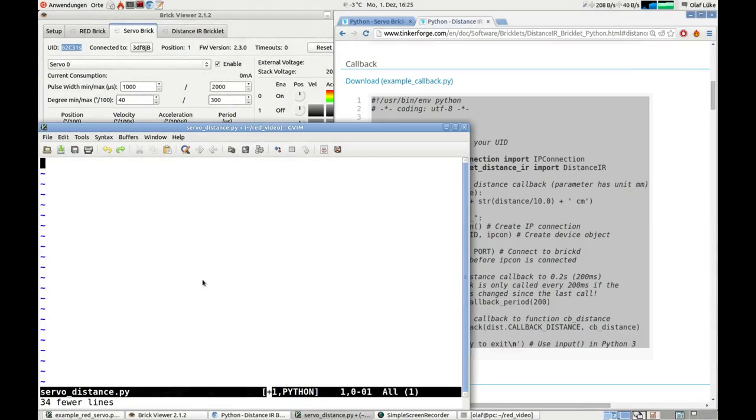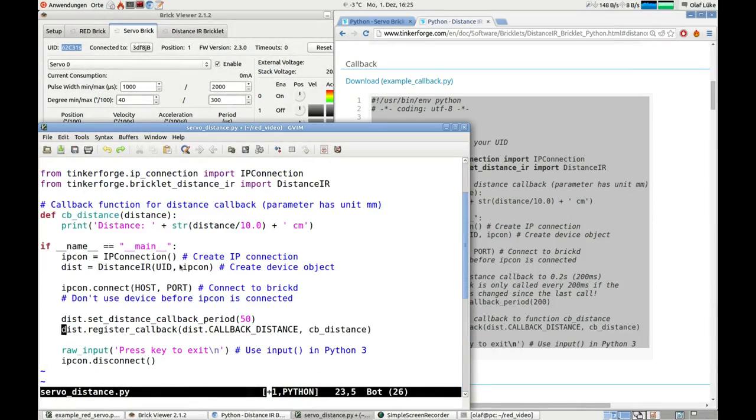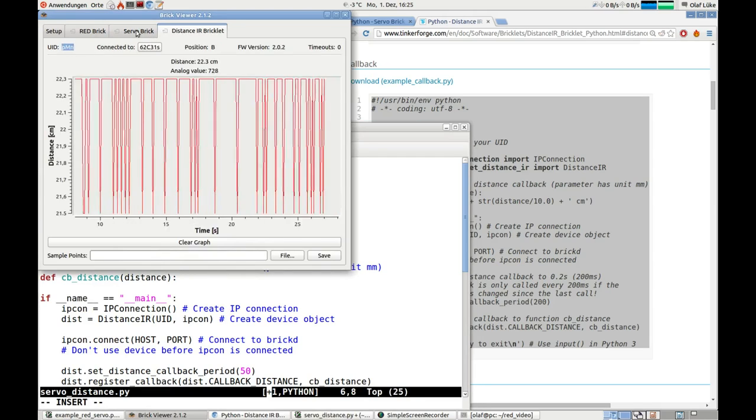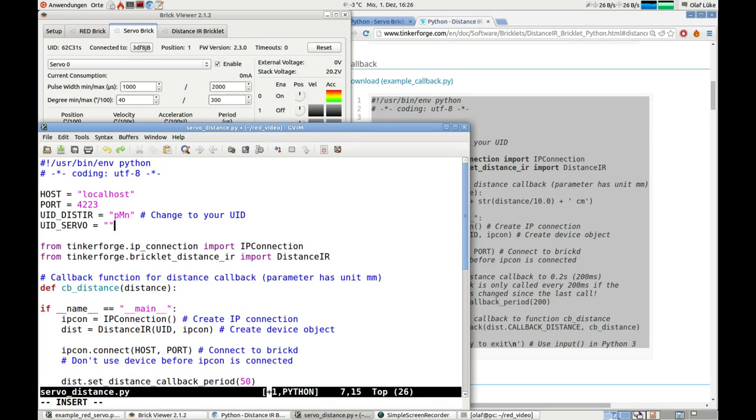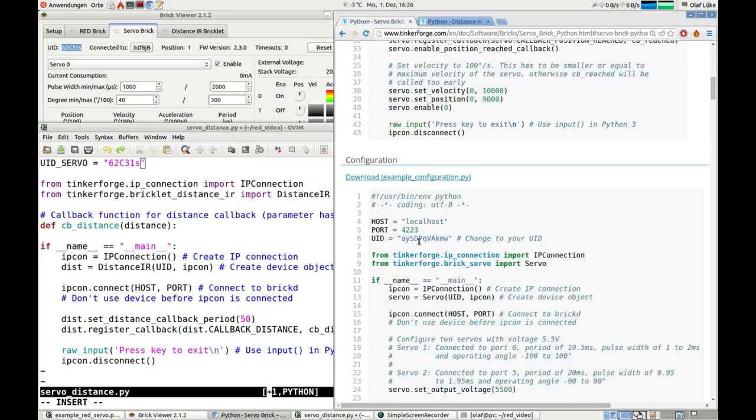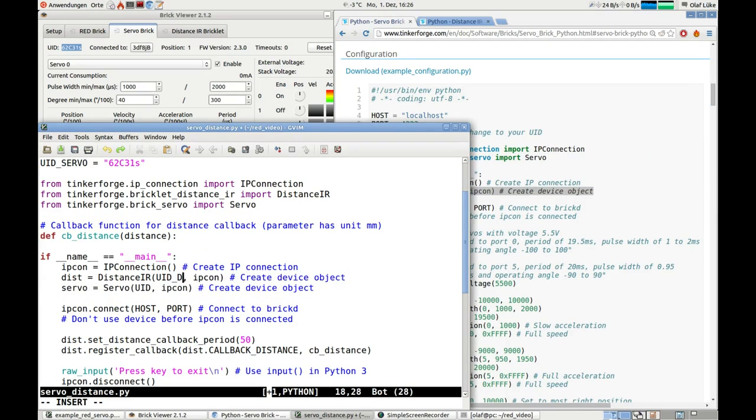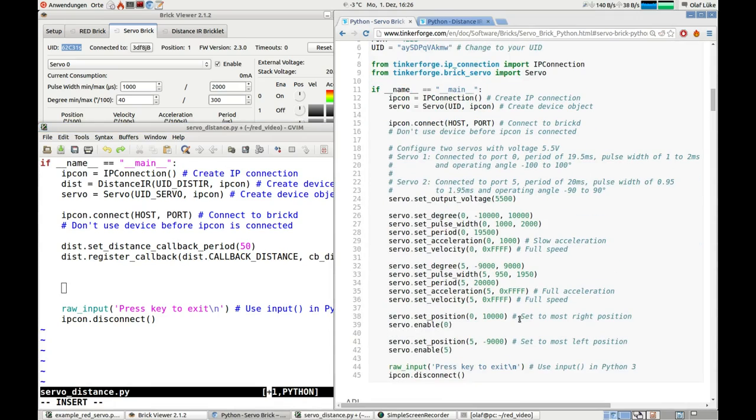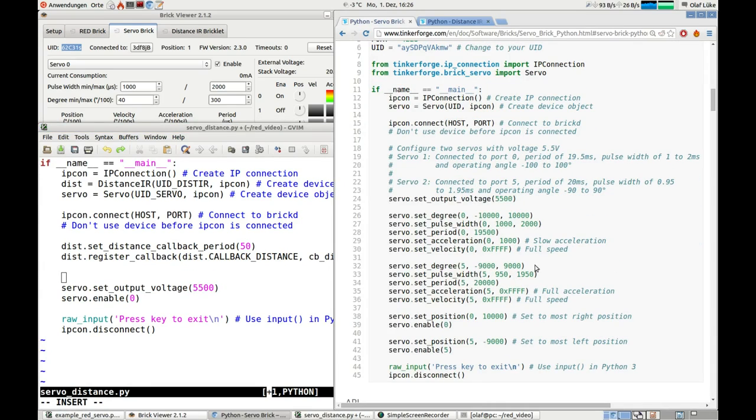For our example, we will now write a small program in Python which will use the measured distance to control the position of the servo. The documentation of every module comes with examples for each programming language. We can use these examples to write our program with very little effort.